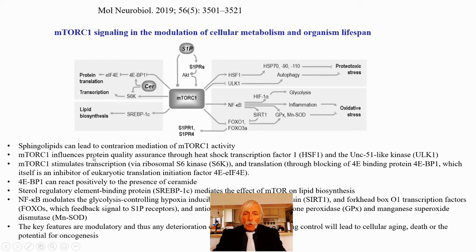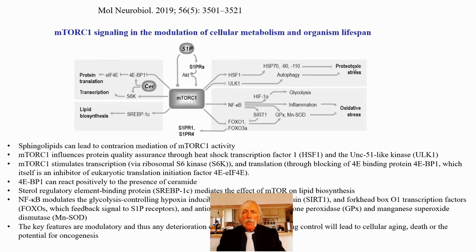Now look what happens: mTORC will influence the protein quality assurance pathway through heat shock proteins like HSP70, HSP90, and HSP110 — those numbers are the molecular masses of the protein. That will block proteotoxicity, which occurs when you have the unfolded protein response (UPR). That happens because of a lack of appropriate folding, primarily of proteins being synthesized and glycosylated for export or signaling through the endoplasmic reticulum to the Golgi apparatus and then to the plasma membrane. Proteotoxicity increases with aging.